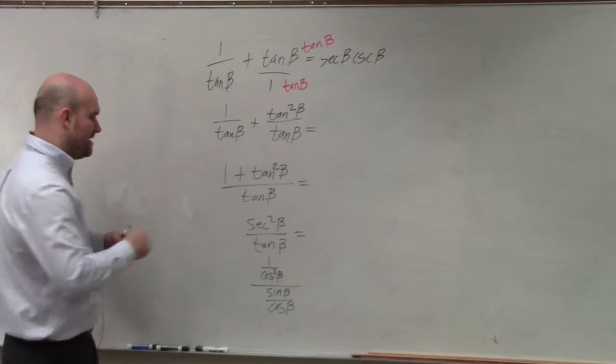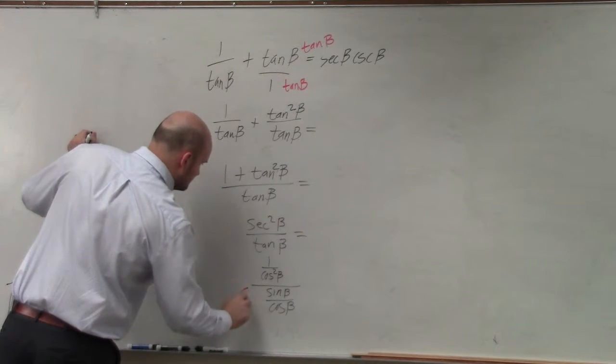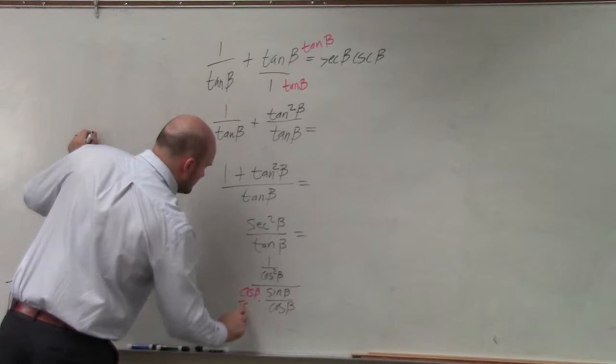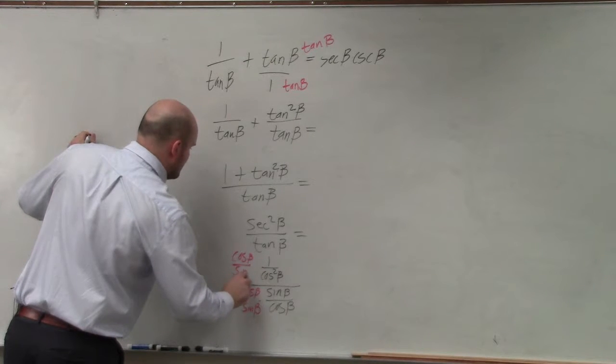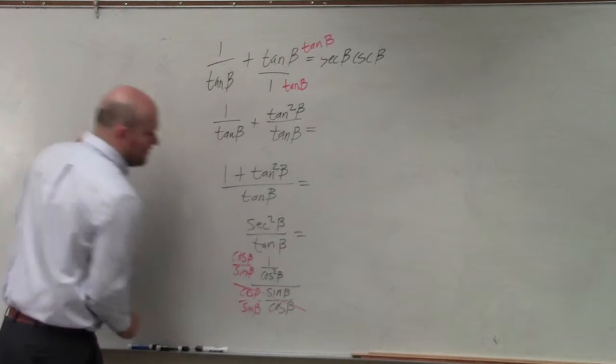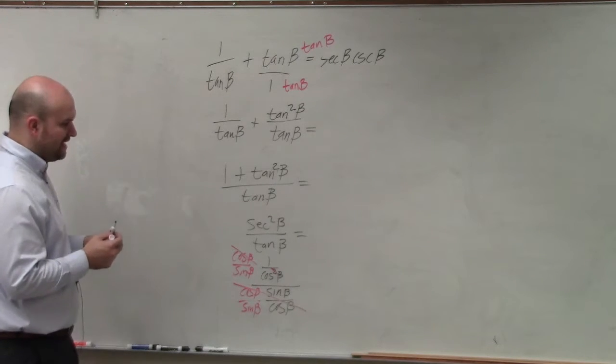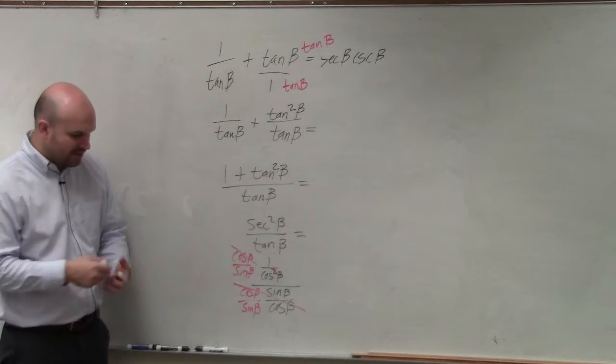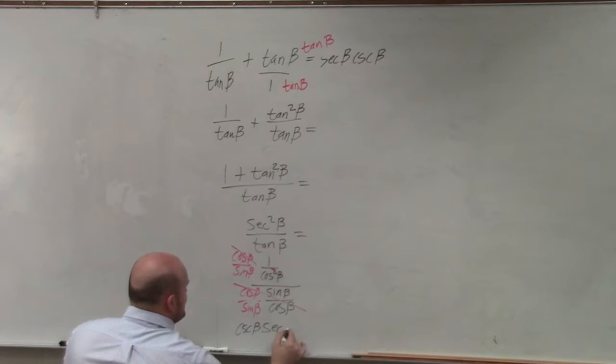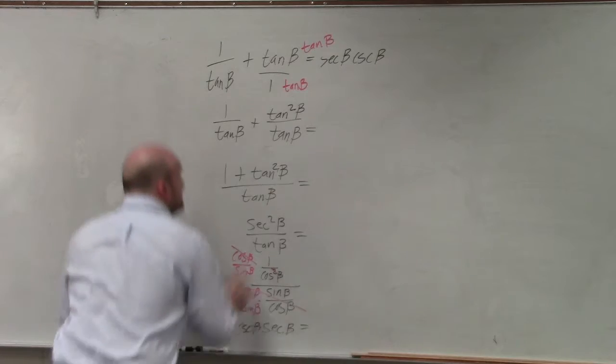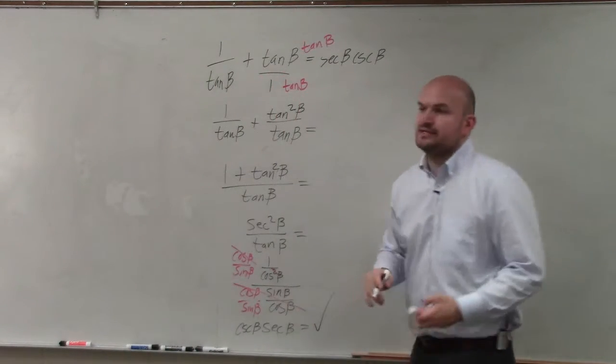Then I would just multiply by my reciprocal. That multiplies to 1. That divides out. And therefore, you're left with 1 over sine times 1 over cosine, which gives you cosecant of beta times secant of beta, which is the same thing as secant of beta times cosecant of beta. So that is done.